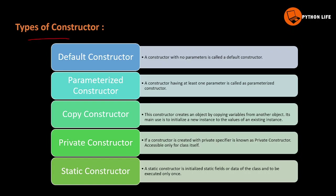The types of constructors are five types: default constructor, parameterized constructor, copy constructor, private constructor, and static constructor. Default constructor is without any parameters. At least one parameter makes it a parameterized constructor. The copy constructor creates an object by copying variables from another object — its values will be accessed.